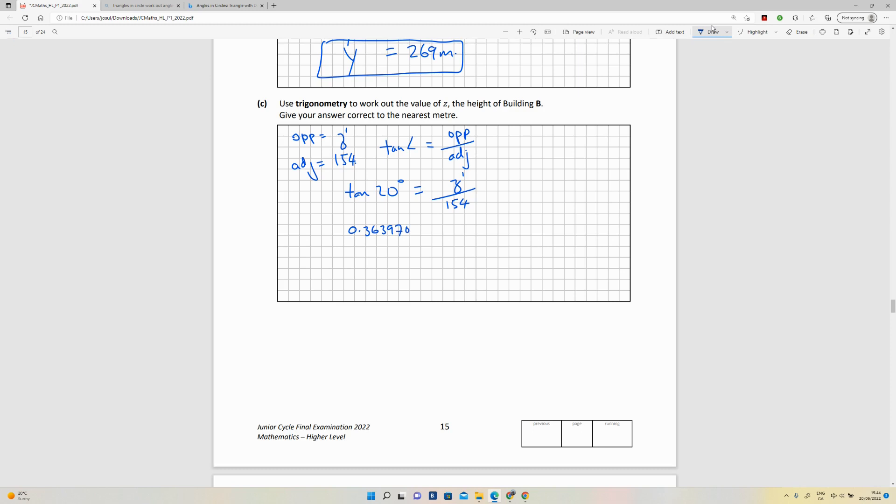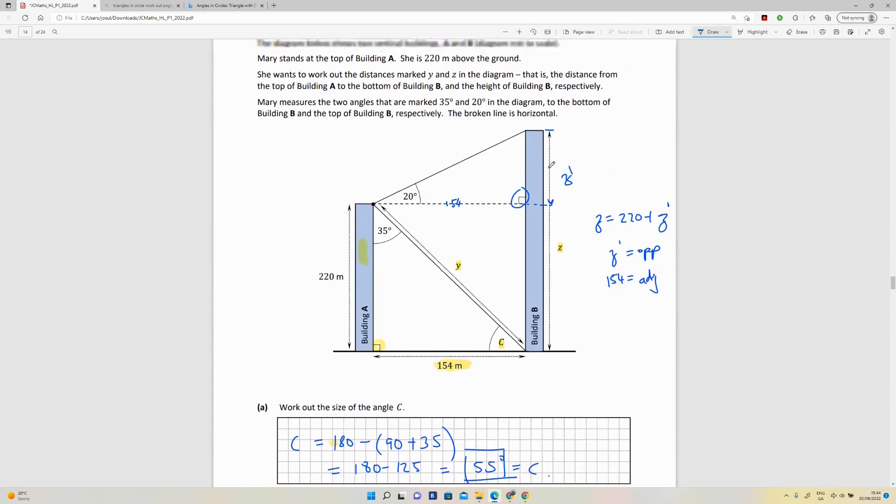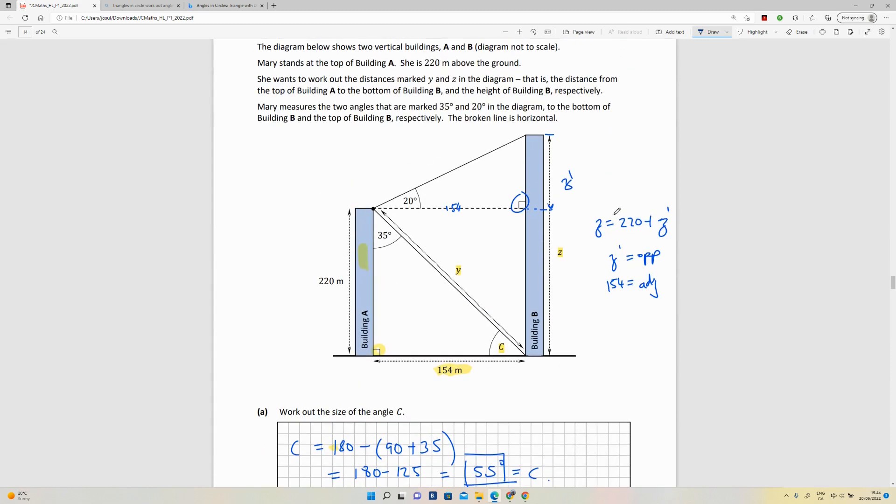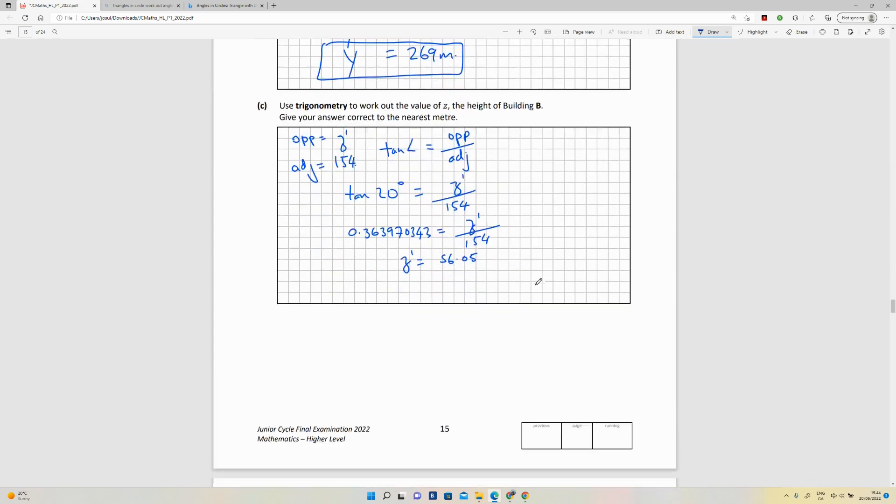Which means this turns into 0.36397, using the calculator, tan of 20 degrees. It's a long number, but I'm just going to use all of it, keep it all. That equals z1 all over 154. So I want to get z1, of course. So z1 is equal to, using the calculator, 56.05.